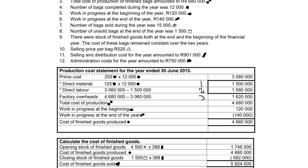So the total cost of production consists of your three basic expenses: direct material, direct labor, and factory overheads.